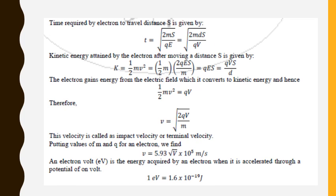You can also calculate the time required for an electron to travel distance S. The time is given by T = √(2MS/QE), derived from the kinematic equations. In place of E, you can substitute V/D. Both formulas can be used depending on the problem. In a numerical problem, if V is given use the second formula; if E is given use the first formula — it depends on what is provided.